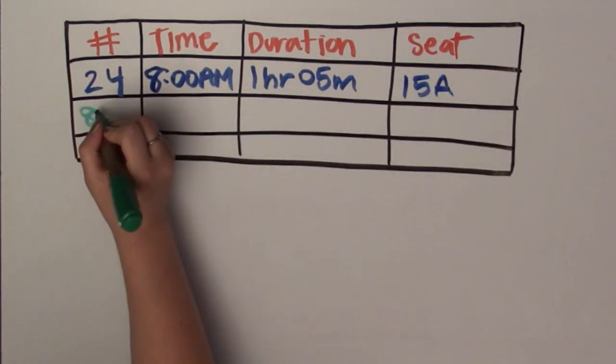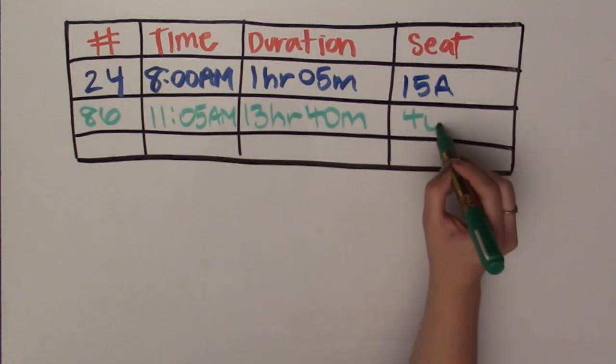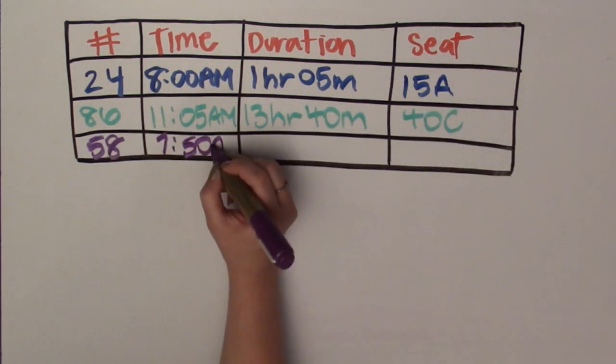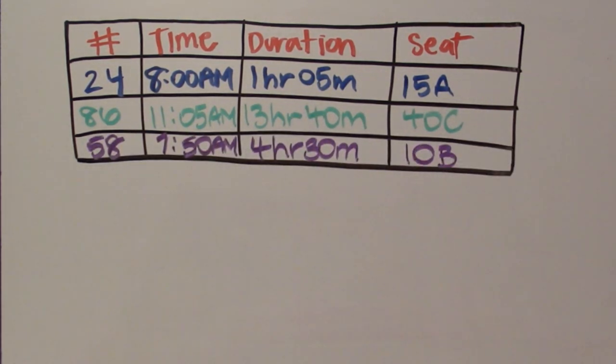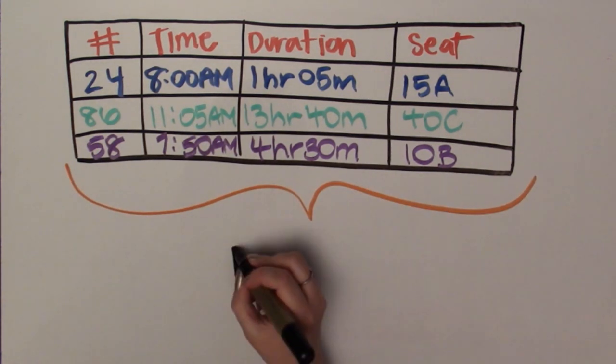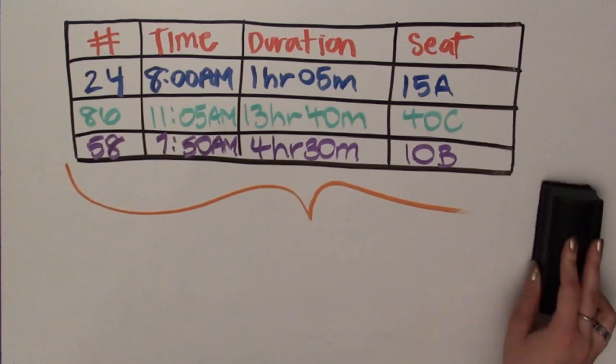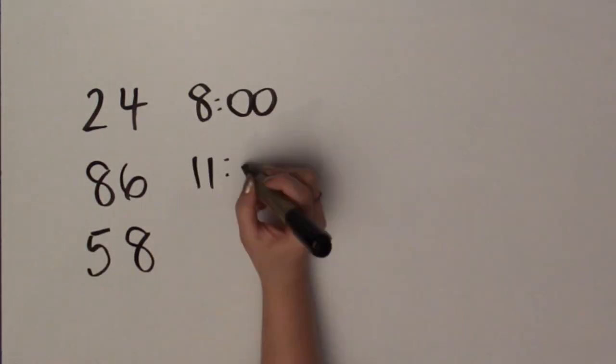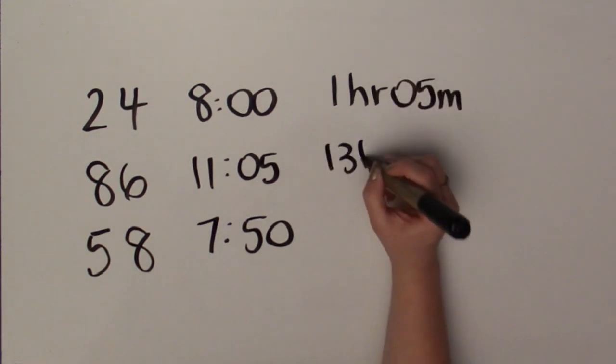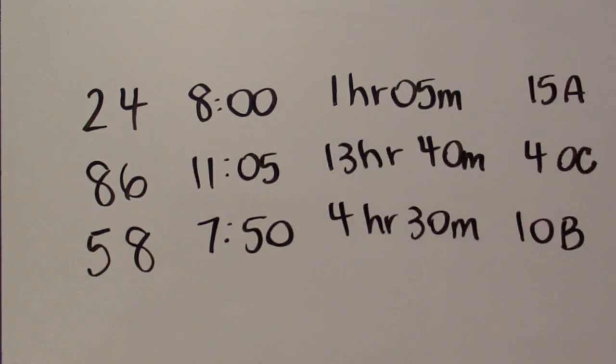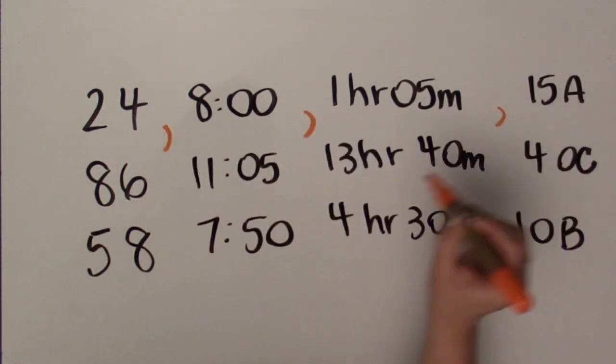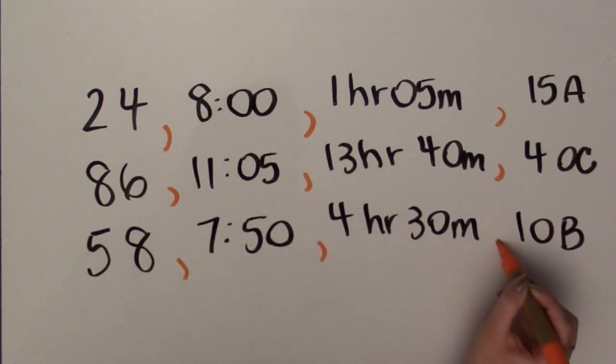By laying data out in a table it makes it easy to look up information. But how can we take a table of information like this and put it into the computer? The easiest way to input data is to type it into a file. Each row of data goes into its own line and we use commas to separate the values in the columns. Storing data in this way is easy for both people and computers to both read and write. And that's a CSV.